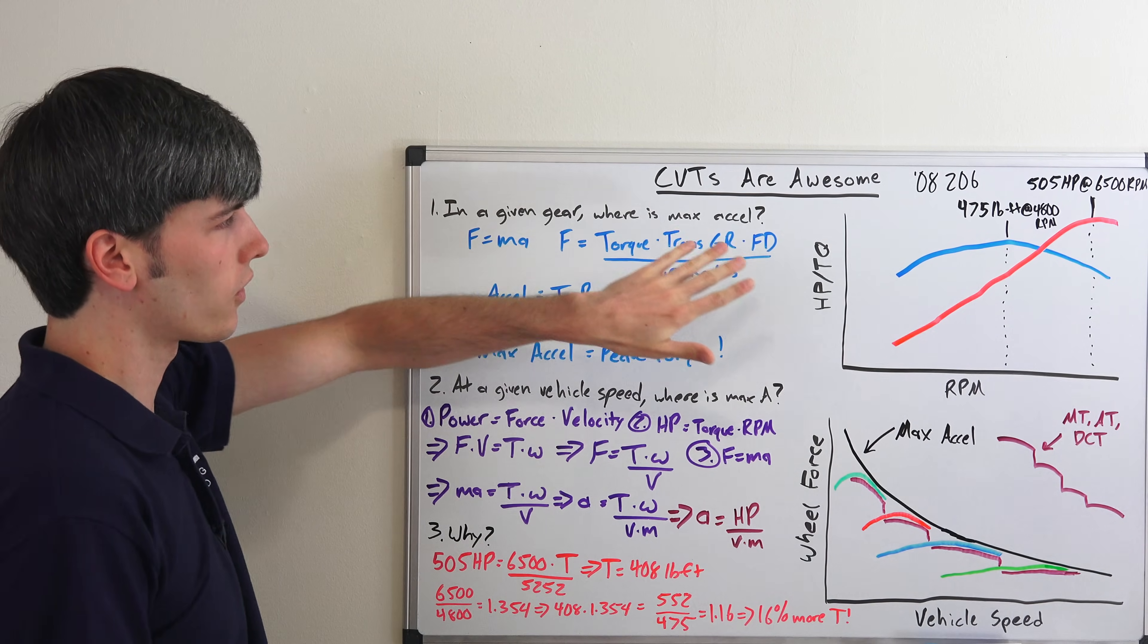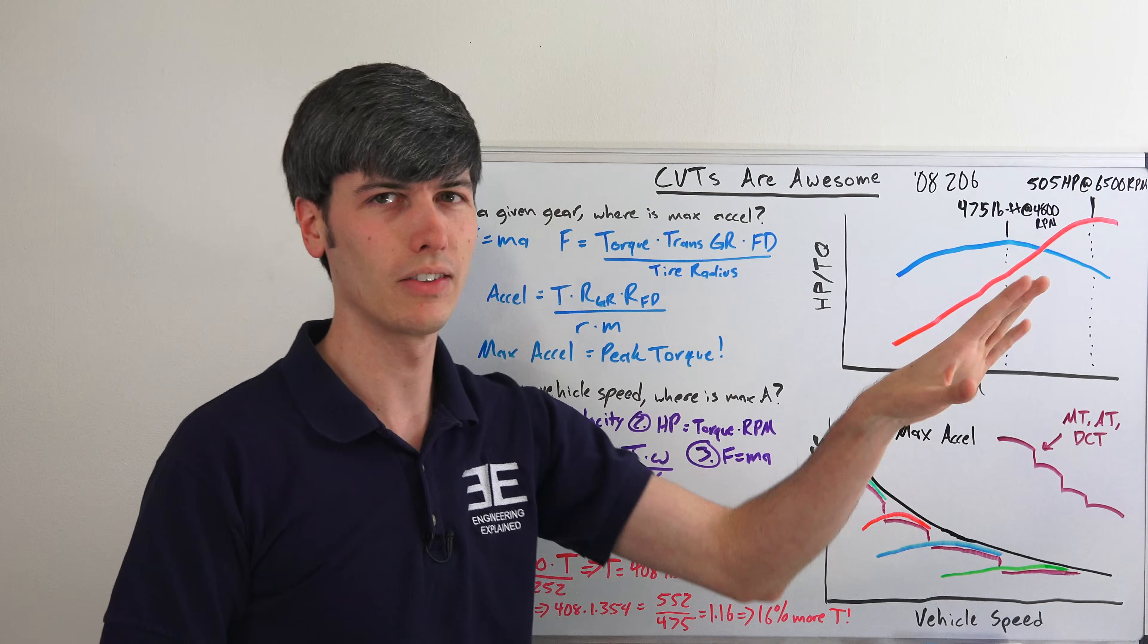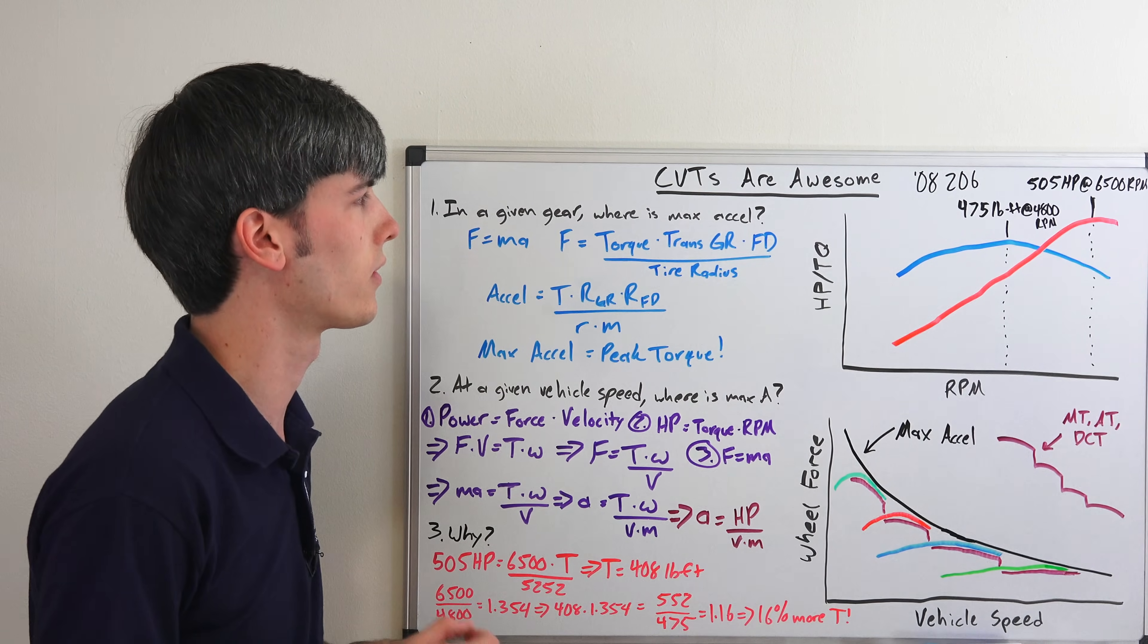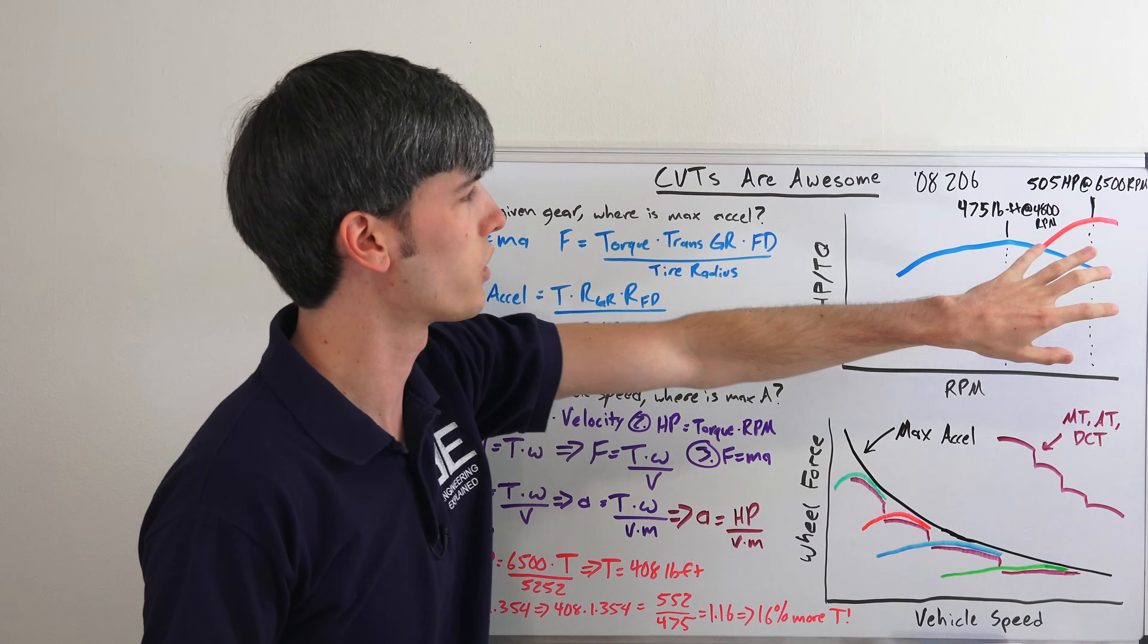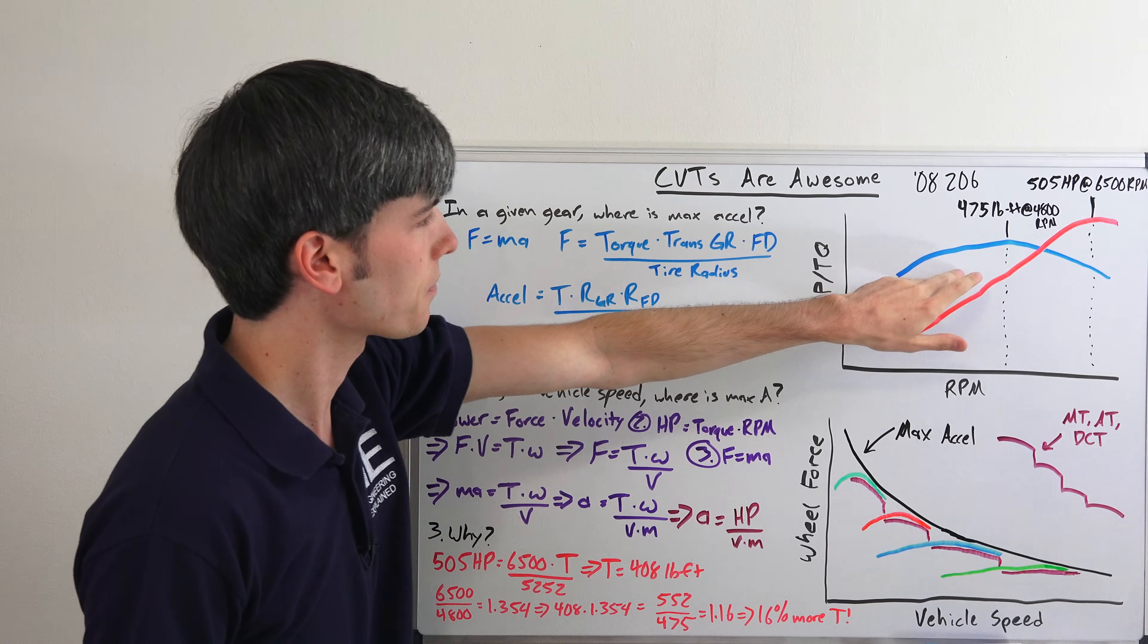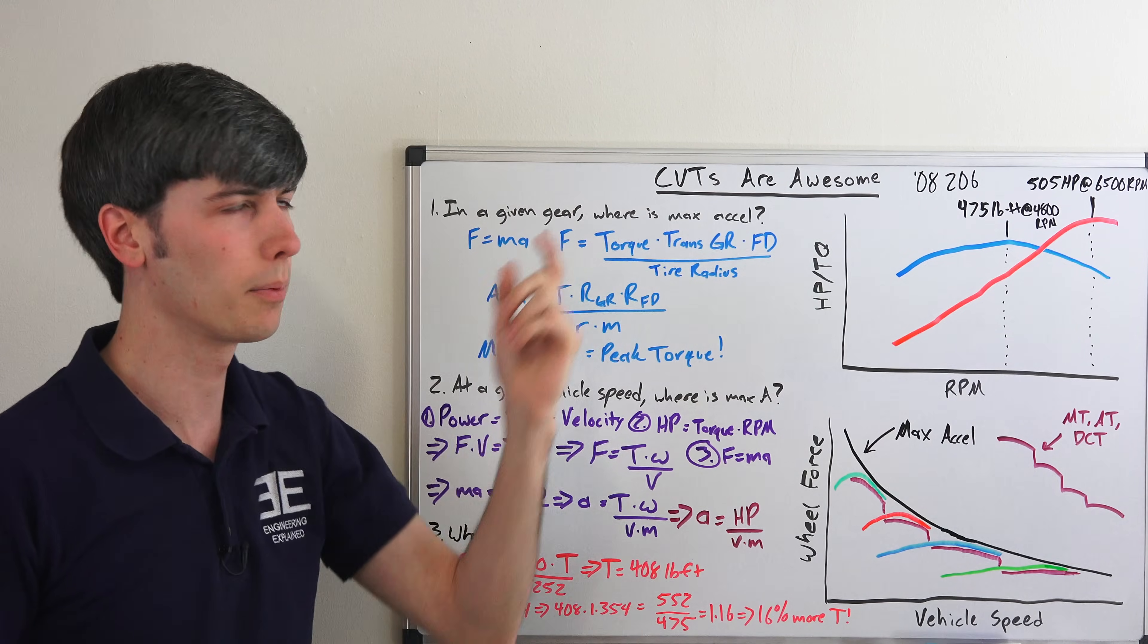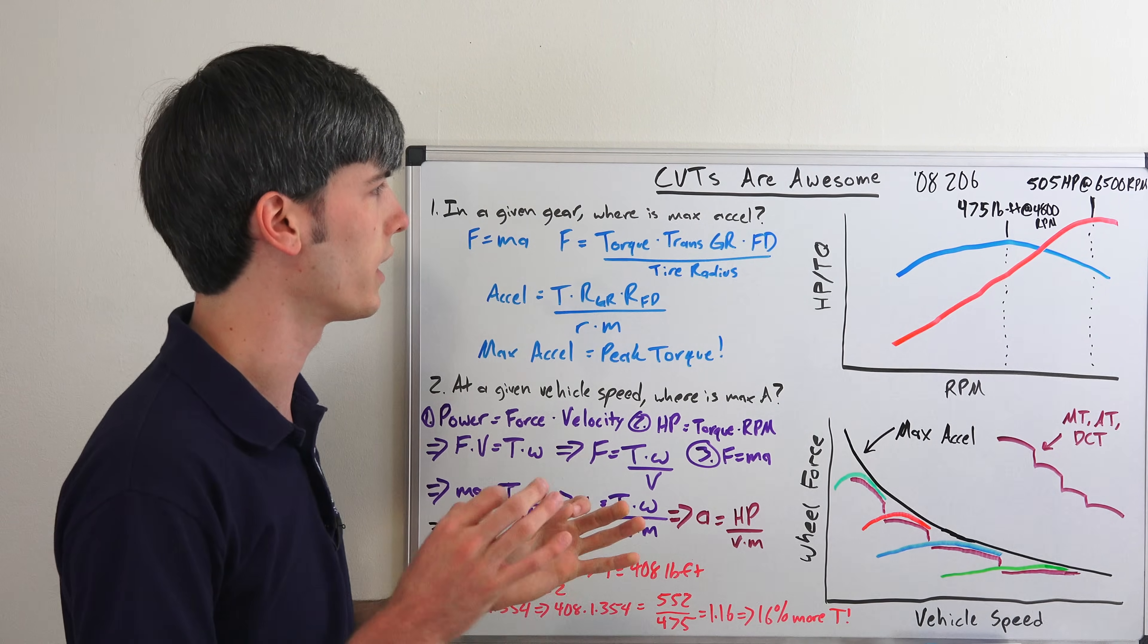So in a given gear, this is our first question to explain why CVTs are actually really cool: in a given gear, where does maximum acceleration occur? Here we have a torque curve of a 2008 Z06, which of course does not have a CVT transmission. The question is very simple - where does maximum acceleration occur in a given gear?